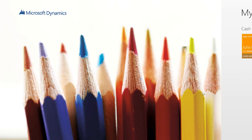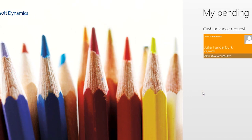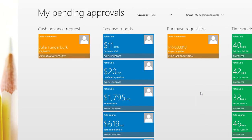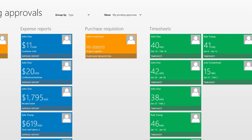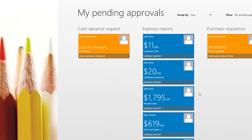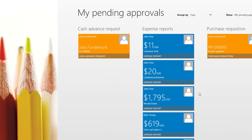Now we're taking a look from the approver's point of view. I'm in the Windows 8 Approvals app, and as soon as I land on the main page, I can see that I have 15 pending approvals, with a couple of new ones. I see that John submitted an expense report and also a timesheet. We can also see approvals of different kinds: a cash advance request, a purchase requisition, and a travel requisition. Basically, the Approvals app is able to handle all of the different types of workflow approvals that you need.